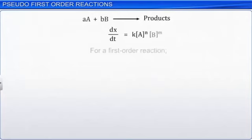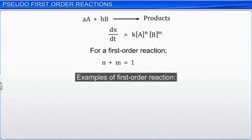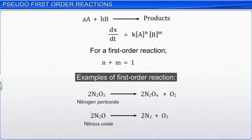For a first-order reaction, the sum of the powers of the concentration terms in the rate law expression is equal to 1. Examples of first-order reactions include the decomposition of nitrogen pentoxide and nitrous oxide.